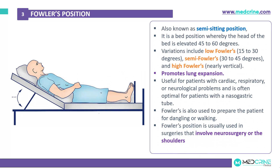The second positioning is Fowler's position, also known as the semi-sitting position. In this case, the head of the bed is elevated 45 to 60 degrees. Fowler's position has some variations: the low Fowler's position, where the head of the bed is elevated by 15 to 30 degrees.